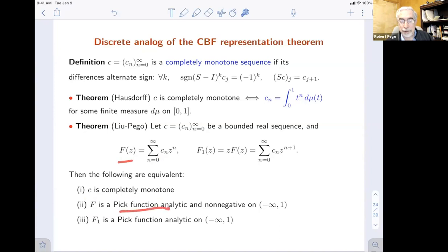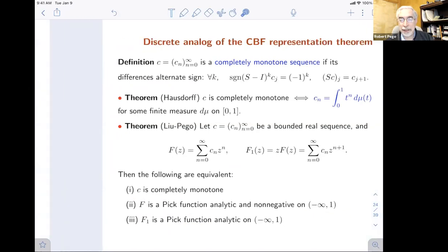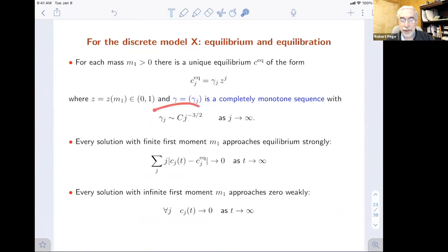We noticed we can characterize completely monotone sequences through their generating functions or the upshifted generating functions. That has to do with the global analyticity property of the generating function. So cn is completely monotone if and only if the generating function is a Pick function, analytic and non-negative on the half line below the point one, or f1 itself needs to be a Pick function. That's the characterization we found. That's the result we apply to get the characterization of the discrete model equilibria.